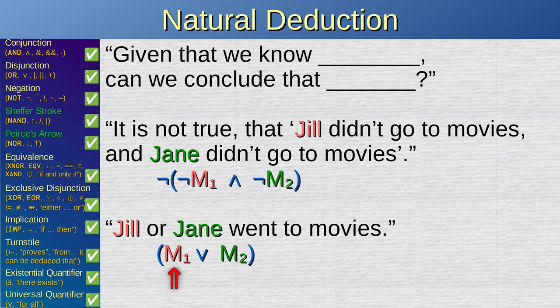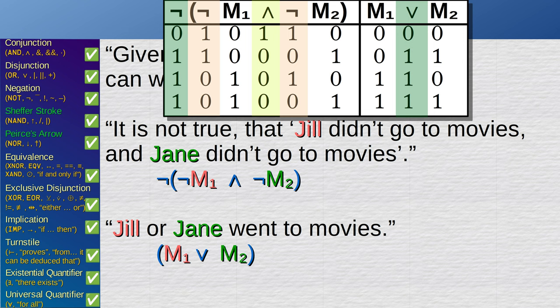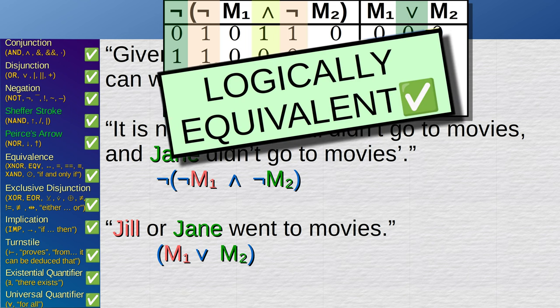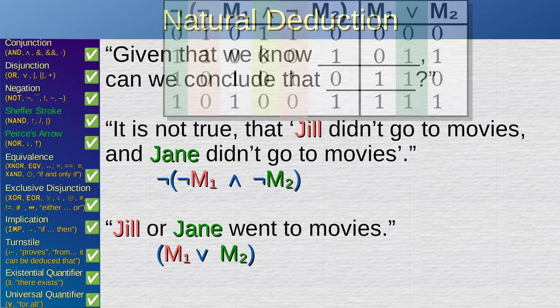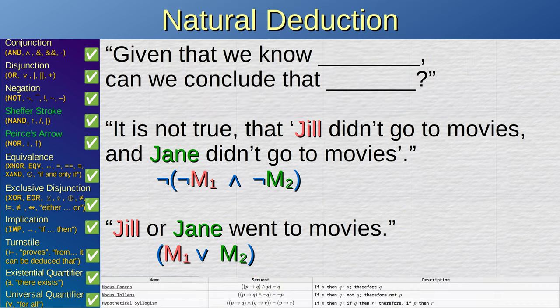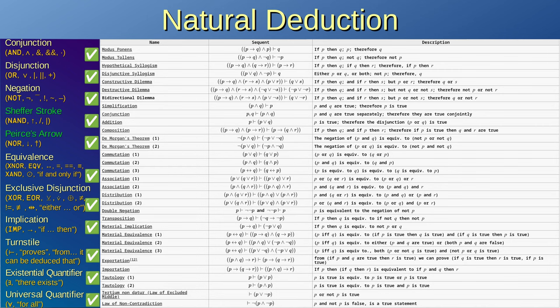How about, Jill or Jane went to movies? Now, the two truth tables are identical. This is but one method to compare two propositions, and it works fine for propositional logic. There are multiple ways to arrive to these same conclusions, for example, by utilizing de Morgan laws and many other identities listed on the screen.